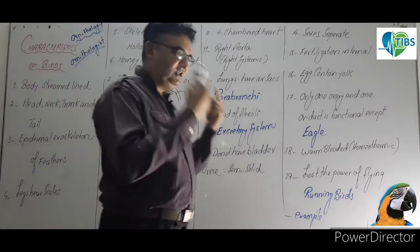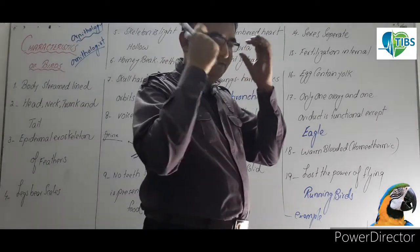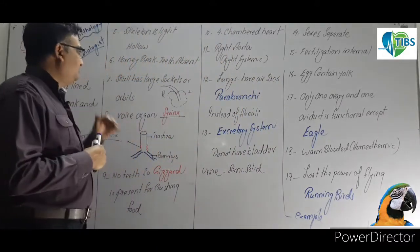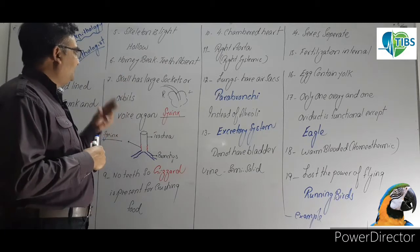The skull has large sockets or orbits. This is where eye placement occurs, where the eye's ligaments and muscles are present, which is why we call them sockets.